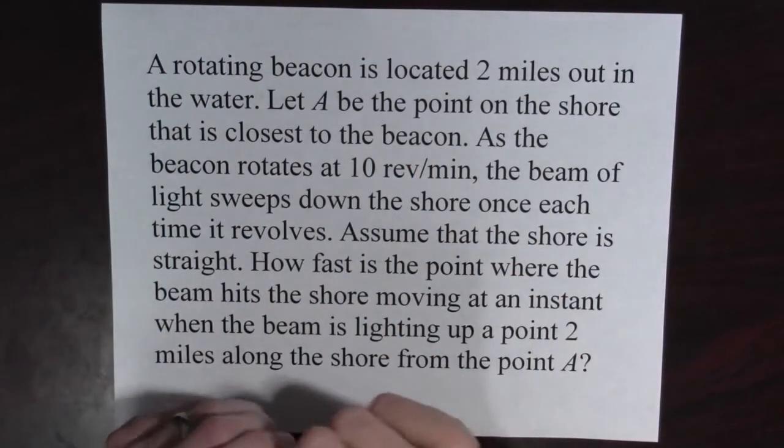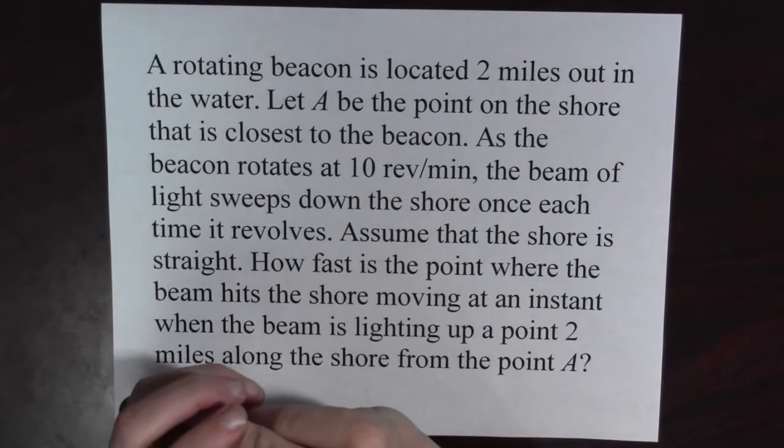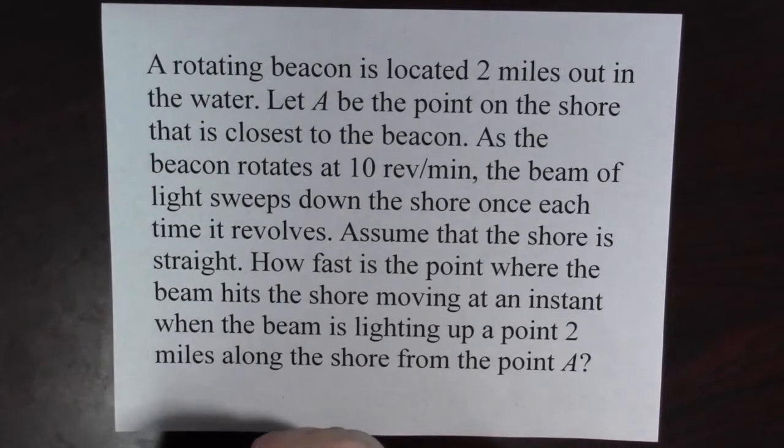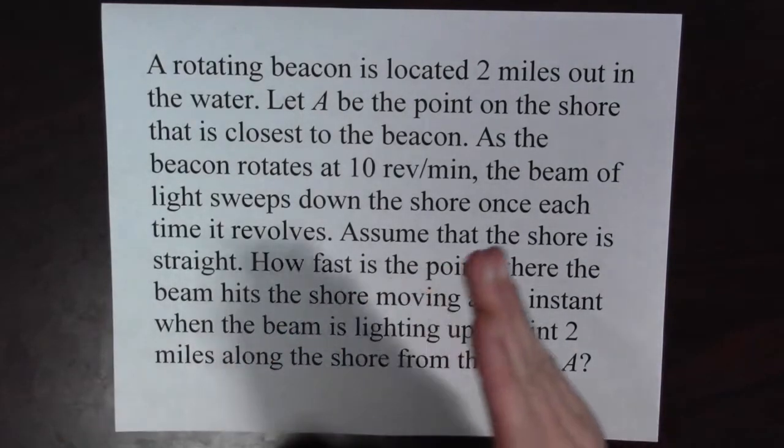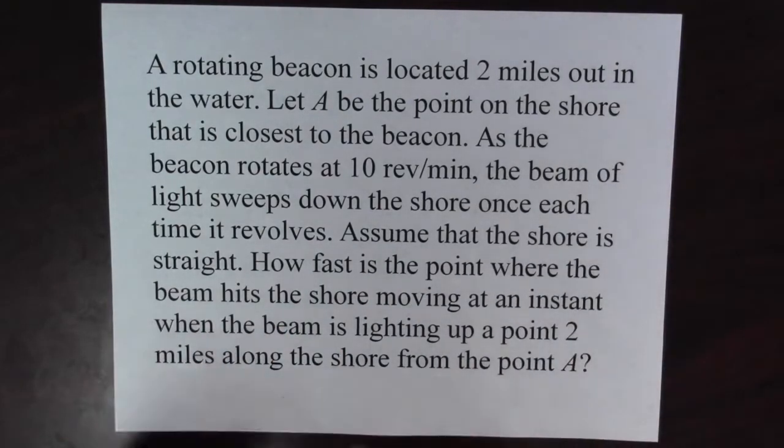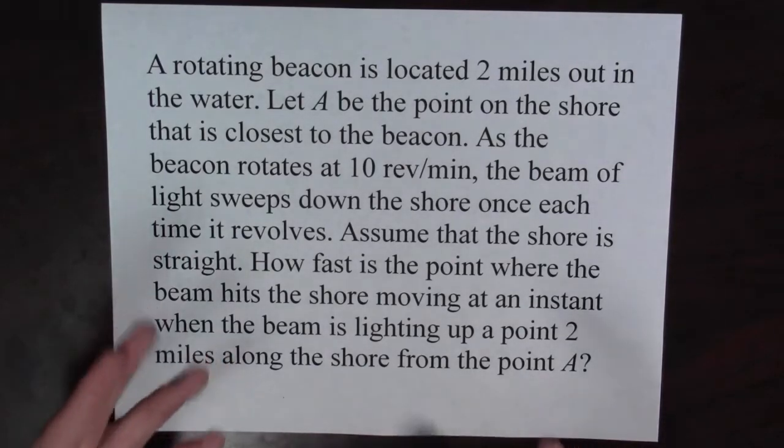A rotating beacon is located two miles out in the water. Let A be the point on the shore that is closest to the beacon. As the beacon rotates at 10 revolutions per minute, the beam of light sweeps down the shore once each time it revolves. Assume that the shore is straight. How fast is the point where the beam hits the shore moving at an instant when the beam is lighting up a point two miles along the shore from the point A?